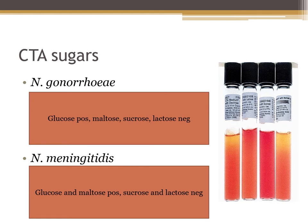When trying to identify Neisseria to the species level using CTA sugars: for Neisseria gonorrhoeae, glucose is positive but maltose, sucrose, and lactose are negative. A memory trick — gonorrhoeae begins with G, and glucose begins with G. For Neisseria meningitidis, glucose and maltose are positive, while sucrose and lactose are negative. Another memory trick — meningitidis begins with M, and maltose begins with M. CTA sugars contain a 1% carbohydrate solution of either maltose, sucrose, lactose, or dextrose.